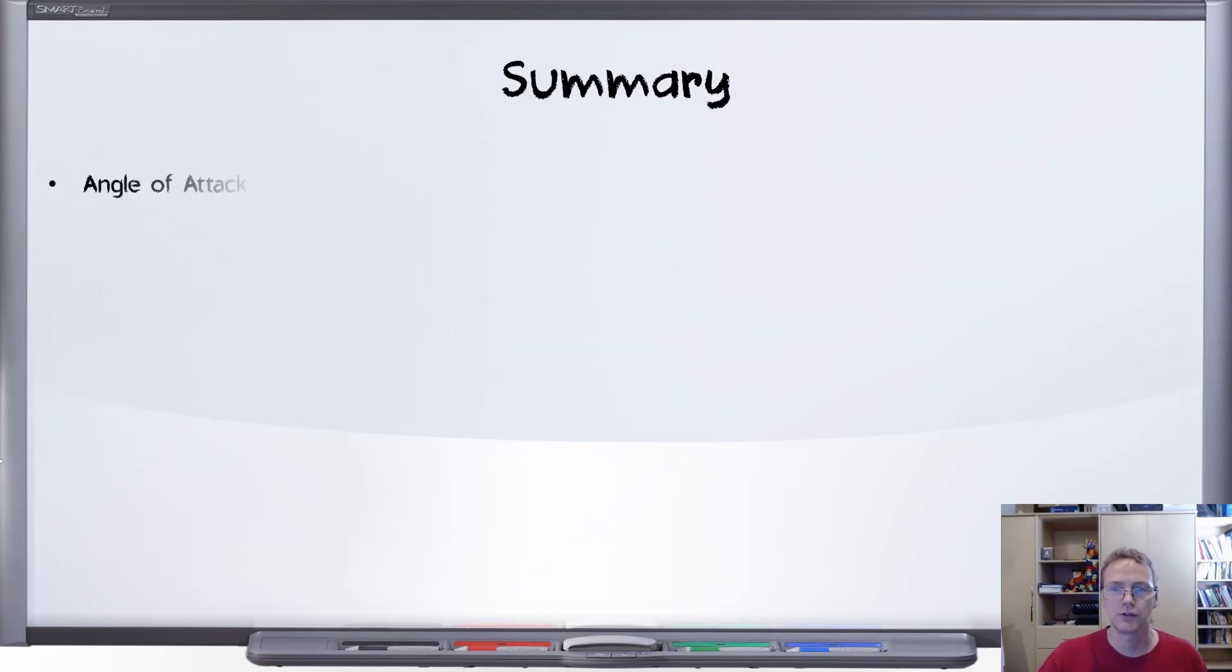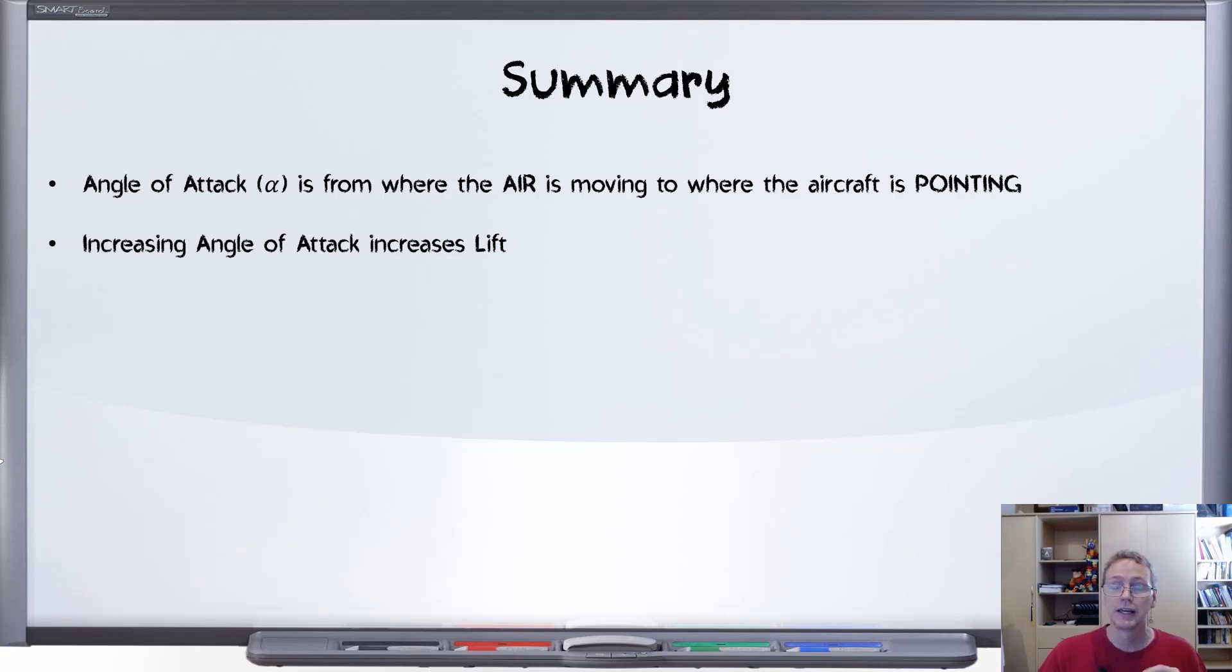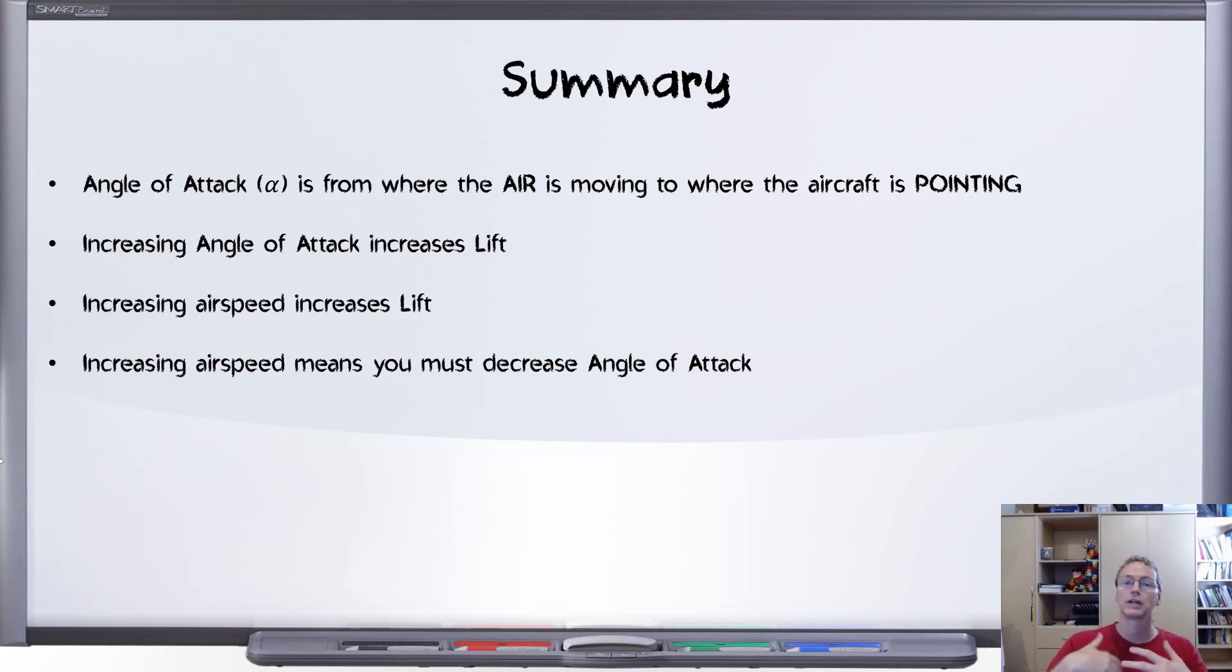So what did we learn in today's video? We learned that angle of attack, or alpha, refers to the angle between the direction of the wind and the direction the airplane is pointing. We learned that in general, increasing the angle of attack increases the overall lift on the aircraft, up until the stall point that is. We also learned that increasing air speed increases lift, and those two being related to each other through that shared lift equation tells us that as we increase the air speed, we would want to decrease the angle of attack in order to maintain level flight, and vice versa.